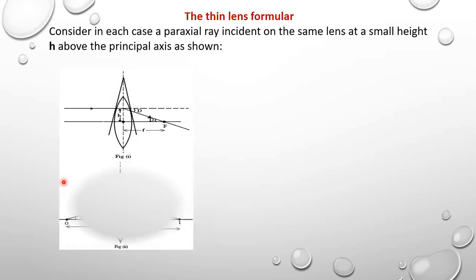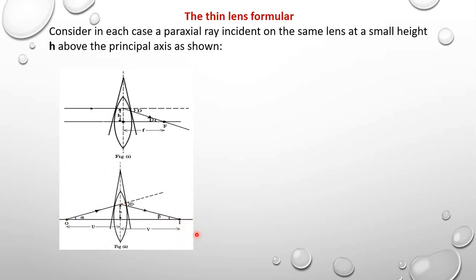In the second figure, we have a ray from a point object O being refracted to form the point image I. This ray undergoes a deviation D, the same deviation as in figure one since it is the same lens. The angle at the object side is alpha and at the image side is beta. The distance from O to the optical center is U and from I to the optical center is V. From figure one, D is approximately equal to tan D, which equals H over F, since tan is opposite over adjacent.